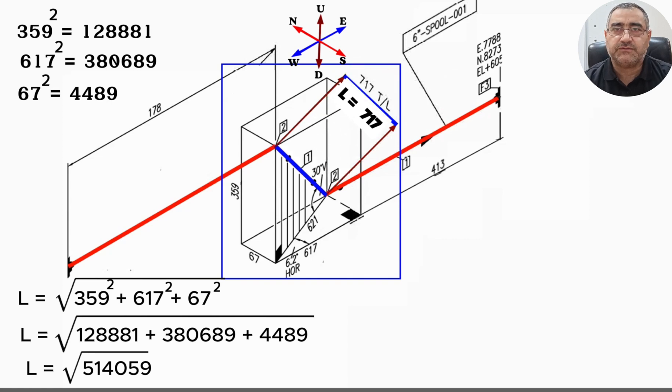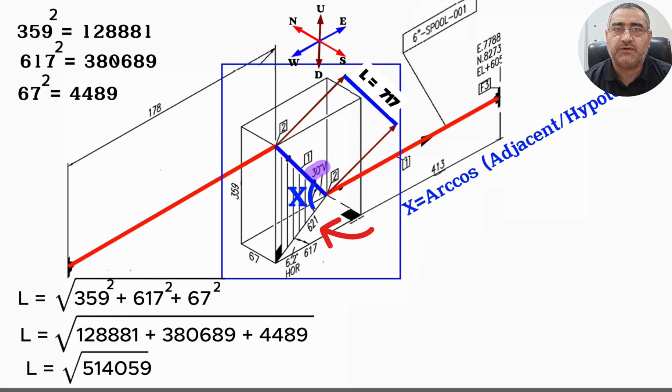Now, let's calculate the accuracy of the elbow's degree, which is shown as 30 degrees in the isometric drawing. The degree of the elbow will be determined based on the right triangle formed by these dashed lines. To calculate the degree of the elbow, we will use this formula: X degrees equals arc cosine of adjacent divided by hypotenuse. In the right triangle formed by these dashed lines, the adjacent side is shown as 621 millimeters, and the hypotenuse is shown as 717 millimeters.